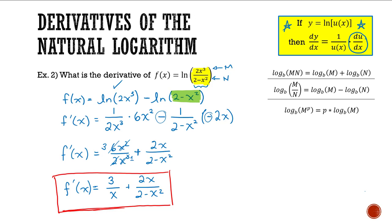Now as I mentioned at the beginning, this could have been done differently — you could have used the entire original expression as your u-term and applied the chain rule from the start, using the quotient rule within it. But I opted to simplify the expression first to avoid that. That's it for derivatives of natural logarithms using the chain rule.